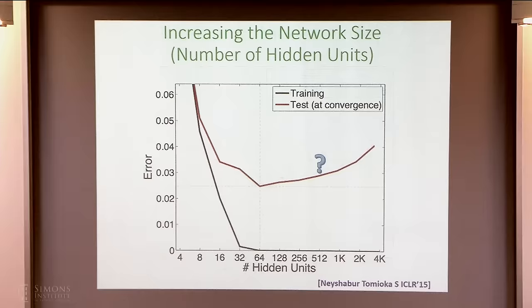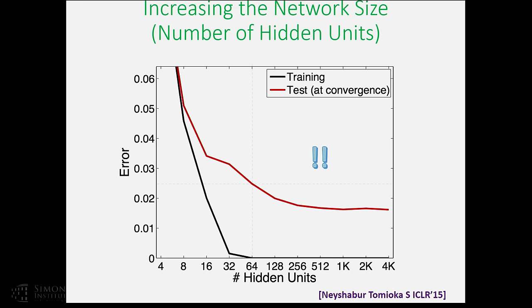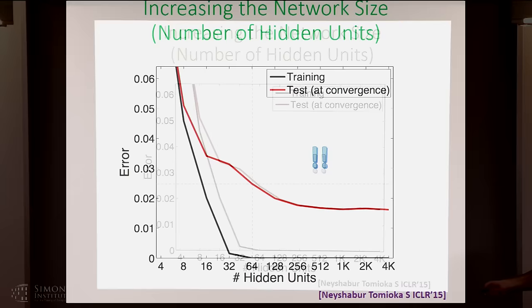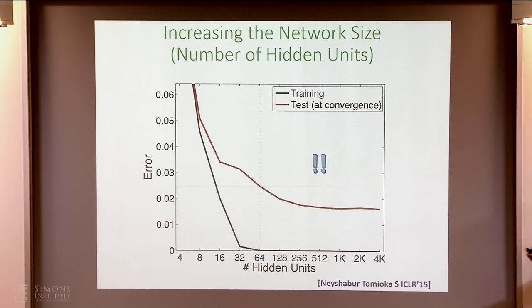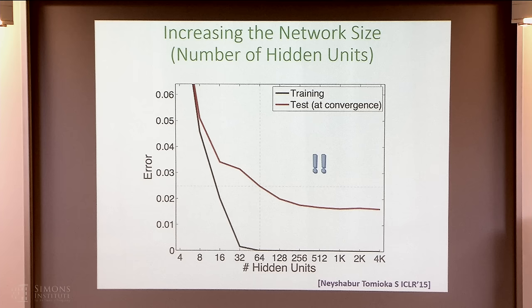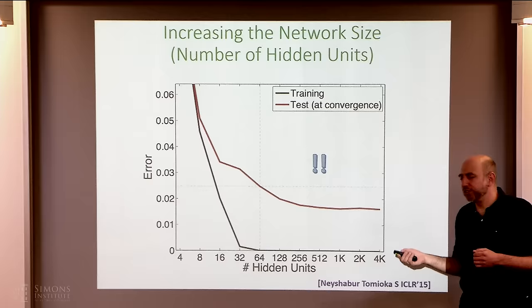This is consistent with what people see in much bigger, more complex networks, where we routinely fit networks with many more parameters than data points without any explicit regularization, and yet do not have overfitting. One audience member asks whether the decision surface changes as units increase: over the range where test error decreases, it definitely changes; once it flattens, probably not — which would explain why overfitting doesn't increase further.